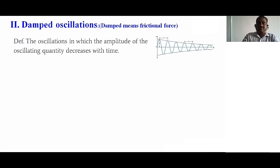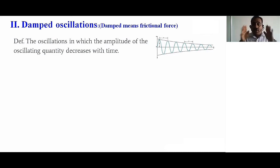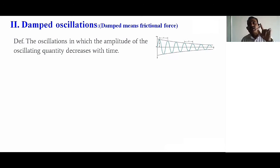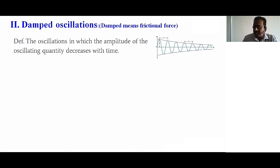You can observe the damped oscillation definition on the screen: the oscillations in which the amplitude or displacement of the oscillating quantity decreases with respect to time — those oscillations are called damped oscillations, and that oscillator is called a damped oscillator.